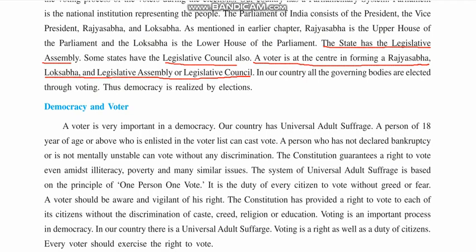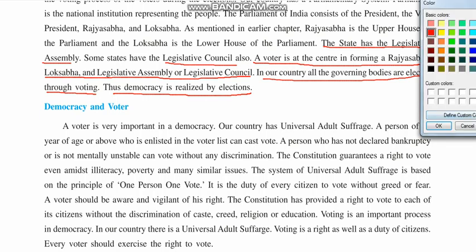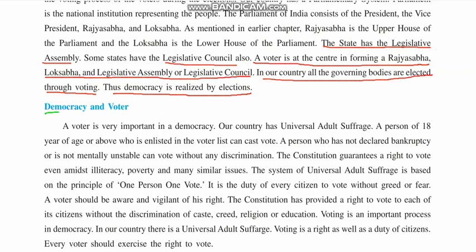In our country, all governing bodies are elected through voting. Voting is the most important thing in democracy — democracy is realized by elections, so democracy and elections are two sides of the same coin. Our country has universal adult suffrage, which means any person who is 18 years of age or above and enlisted in the voter list can cast a vote.